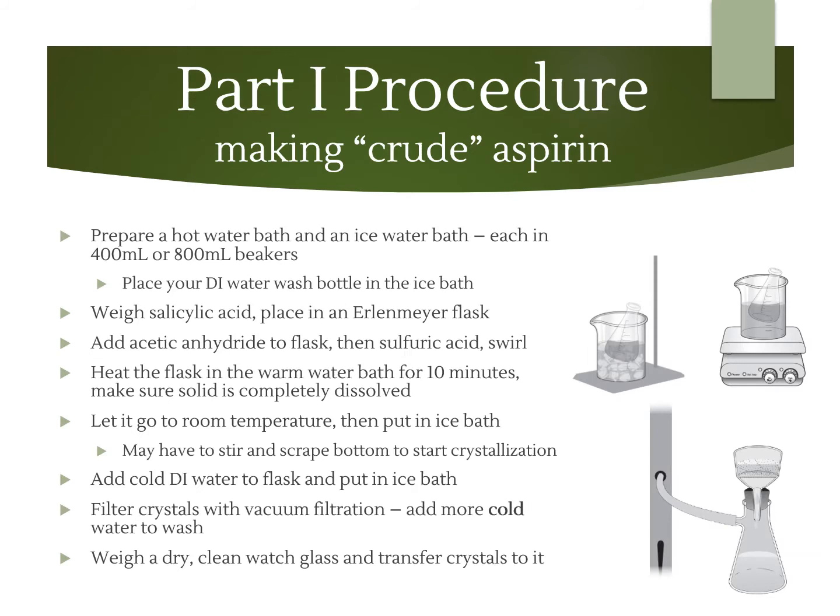For the procedure for making aspirin: first we're going to make a couple of water baths — one hot water bath and one ice water bath — and we're going to initially cool the DI water in the ice bath. Then we're going to weigh out some salicylic acid and put it in an Erlenmeyer flask. We're going to add acetic anhydride and sulfuric acid, and make sure all the solid is dissolved. Then we're going to warm up the flask for about 10 minutes, set it aside to cool to room temperature, and then quickly cool it in the ice bath. To start crystallization we're going to have to scrape the bottom of the flask.